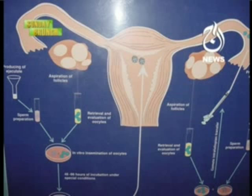This diagram shows the left hand side of the ovary, egg, and the tube. The sperm and egg combine to form an embryo. Then the embryo will travel into the uterus from the ovary.